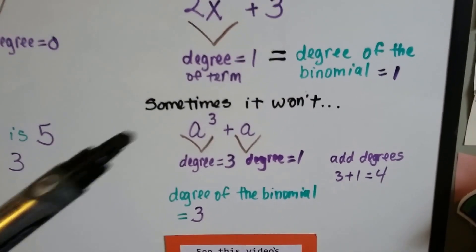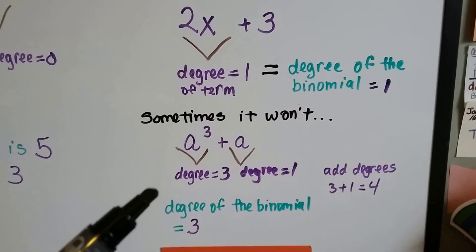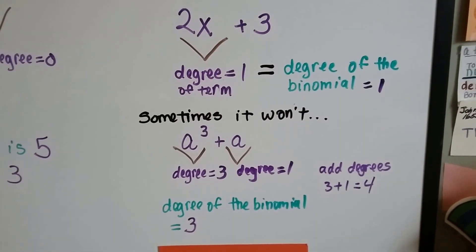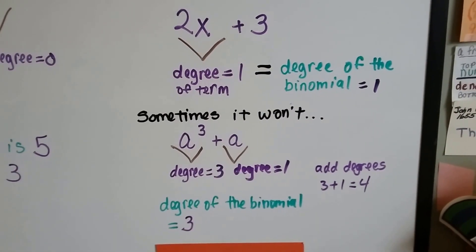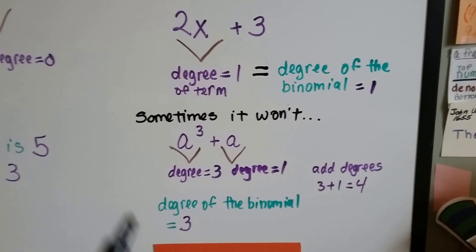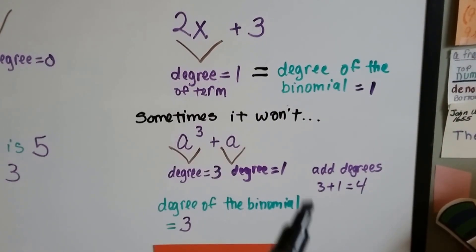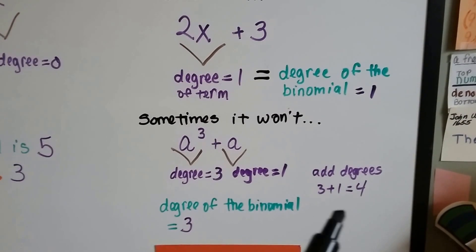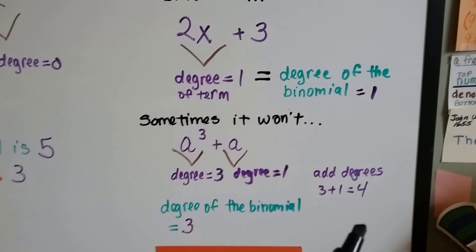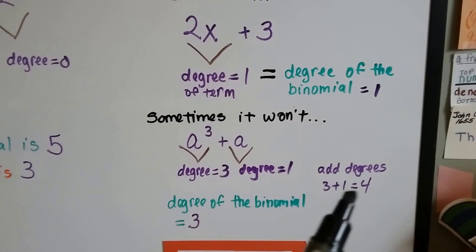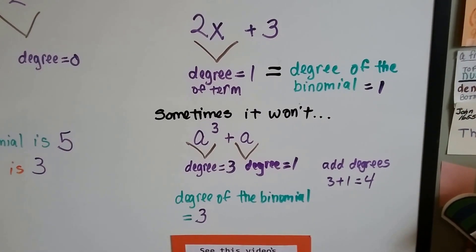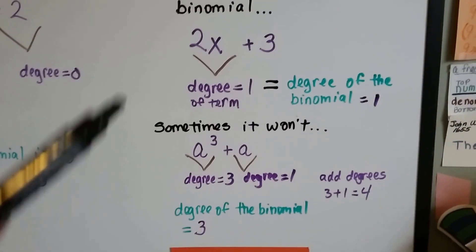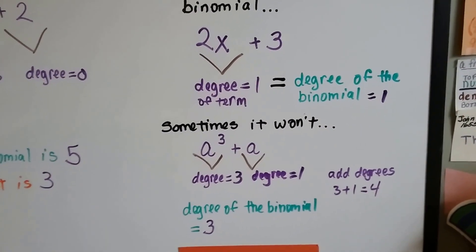Sometimes it won't. We've got a to the third power, so this degree is 3, and this is just a with our little invisible 1, so that degree is a 1. If we were to add these together, we'd get 3 plus 1 is 4. And the total, when we add the degrees of the terms together for this binomial, ends up being more than the degree of the binomial. So sometimes it'll equal it, and sometimes it won't.